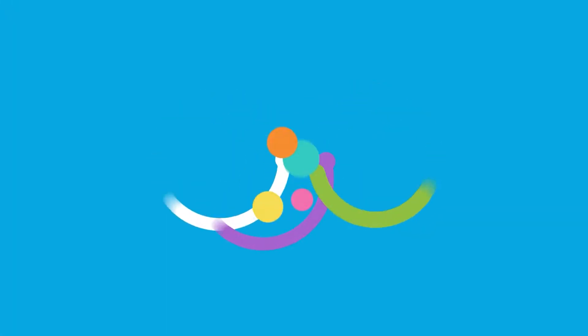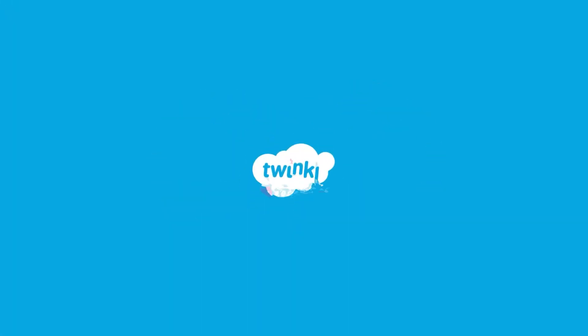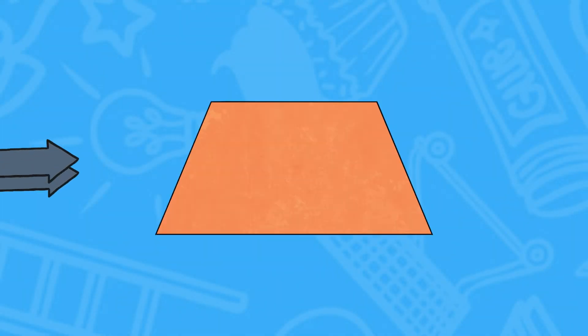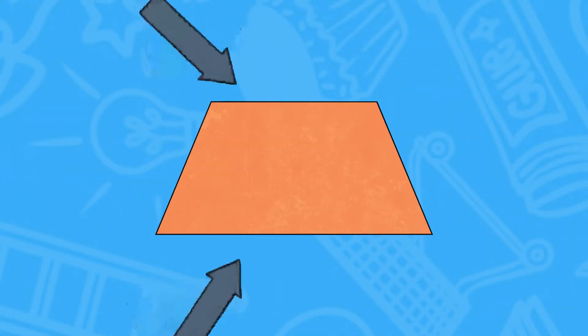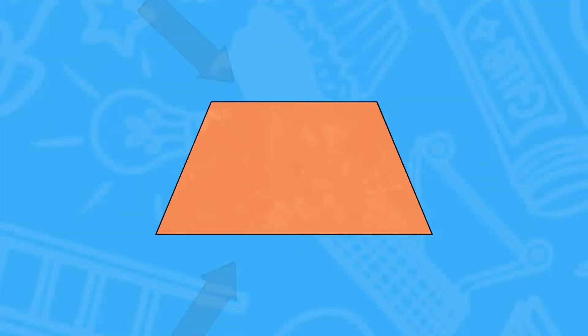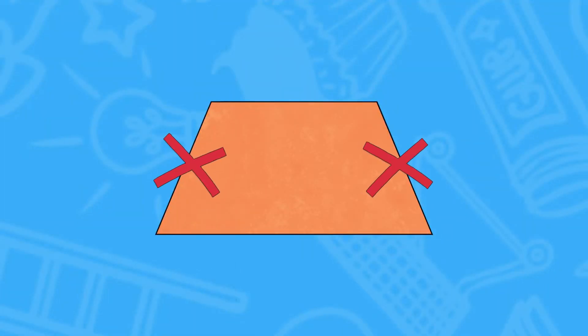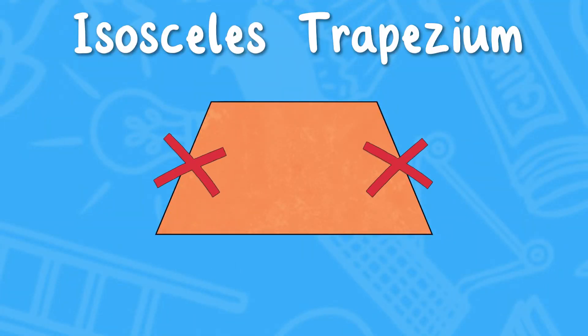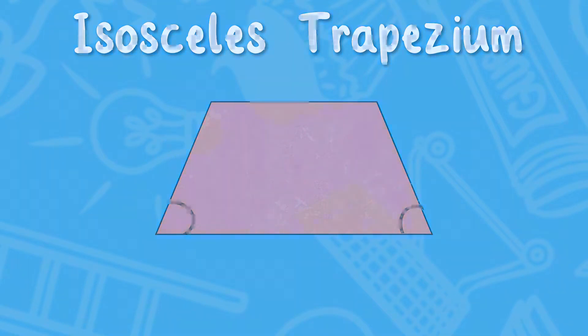What is a trapezium? What does my child need to know about trapeziums, and how can I help my child at home? A trapezium is a quadrilateral. It has one pair of parallel sides; the other two sides are not parallel. Sometimes a trapezium is an isosceles trapezium, with two equal angles along one side.